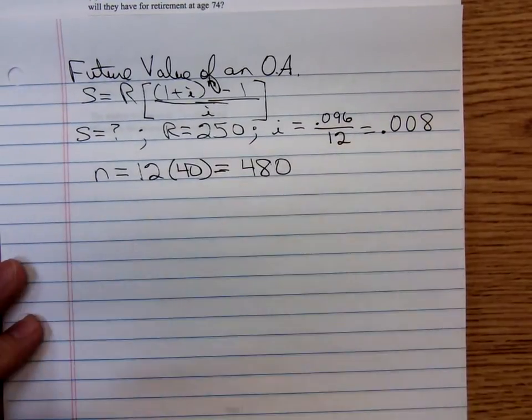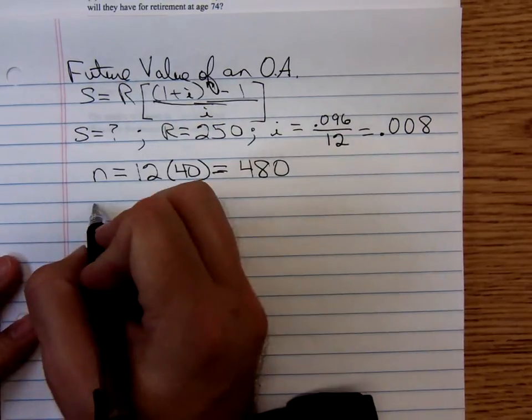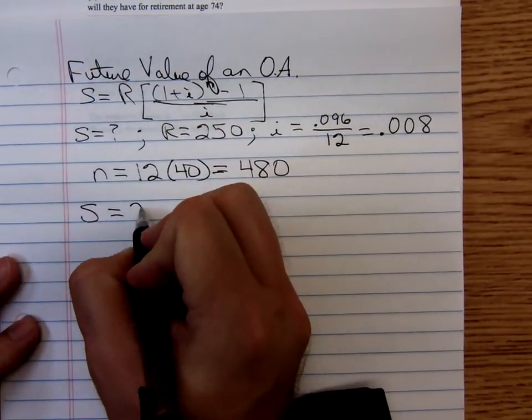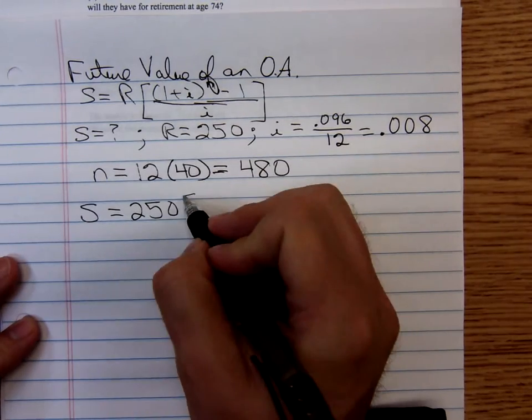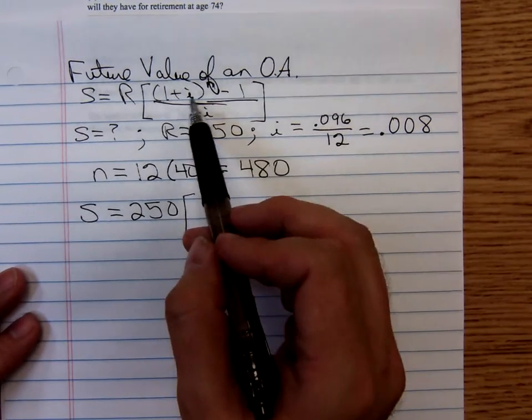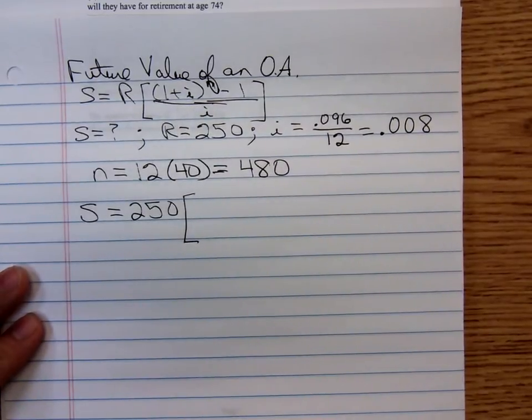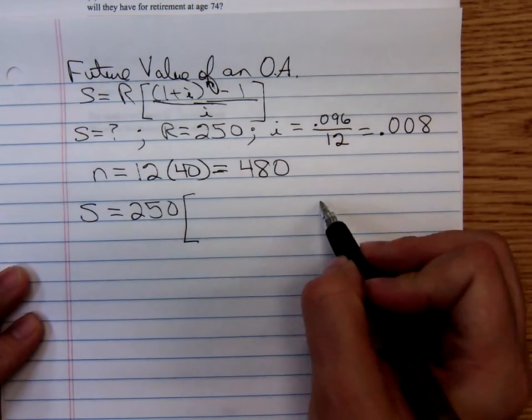Plugging these numbers into the future value of an ordinary annuity formula, we get S = 250 times, here's my bracket amount, (1 + i).